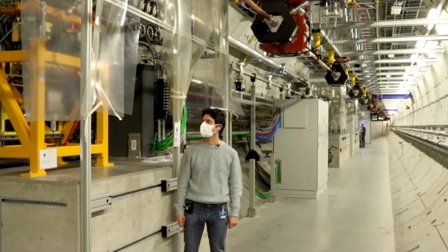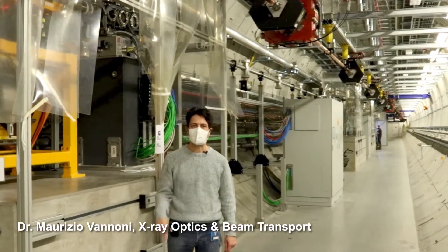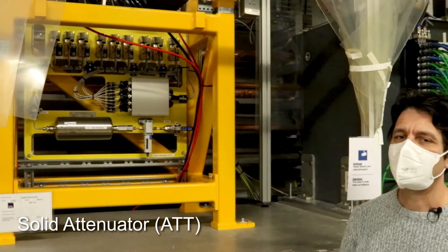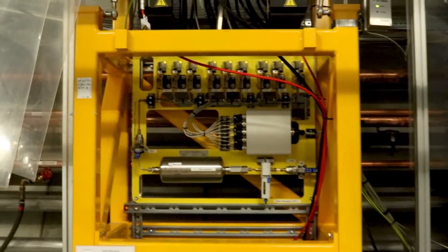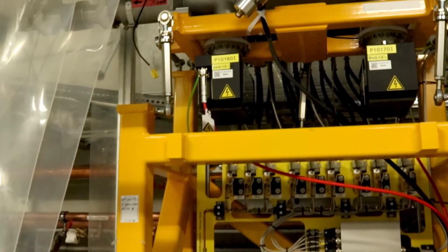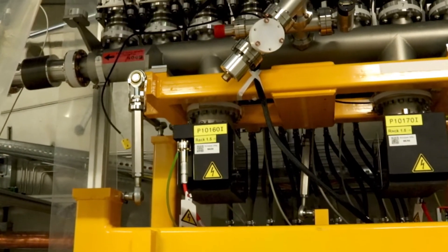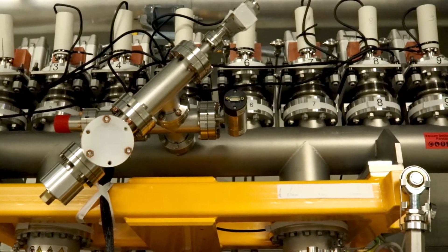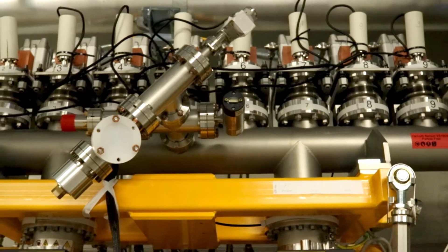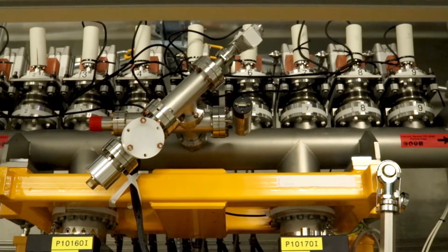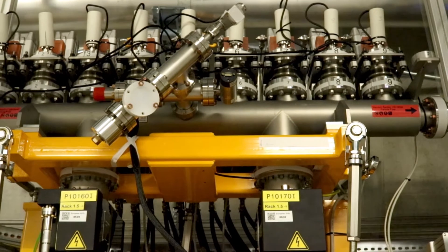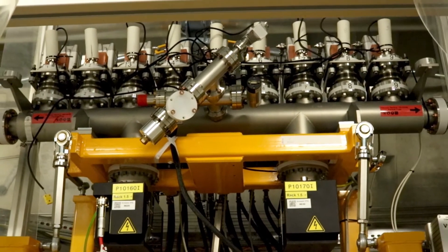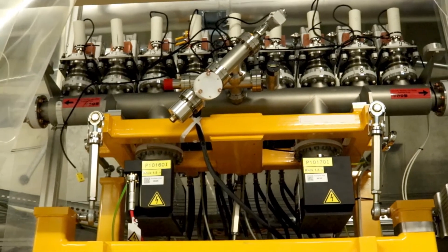We are in SASE 1. This is the solid attenuator. It's made by many plates of two materials, diamond or silicon. Every white cylinder corresponds to one plate that can be inserted inside the beam or not. You can insert more or less plates, and this way you can decide how much of the beam you want to absorb and have a different power of the beam.